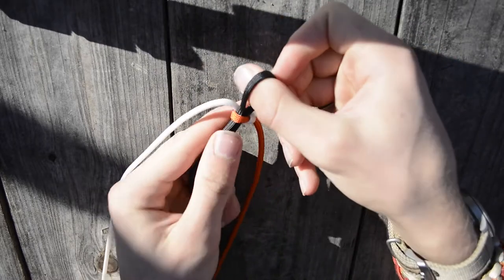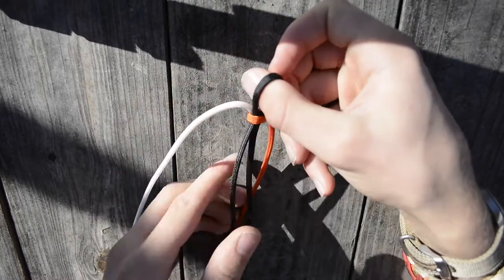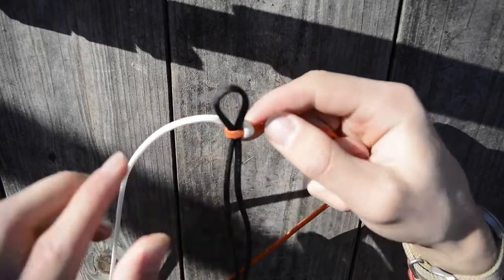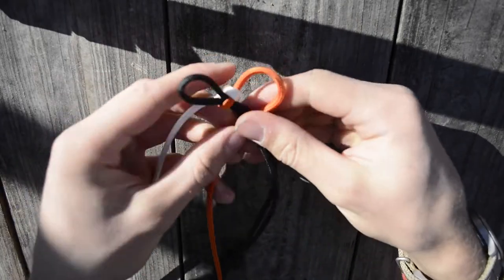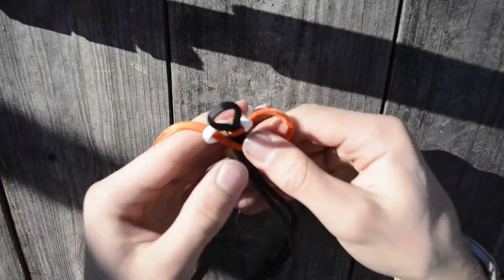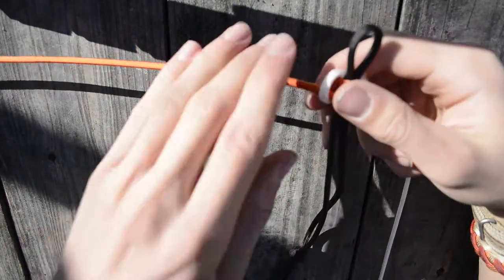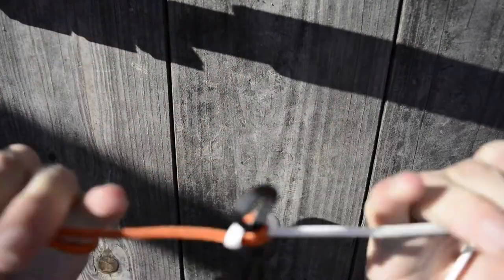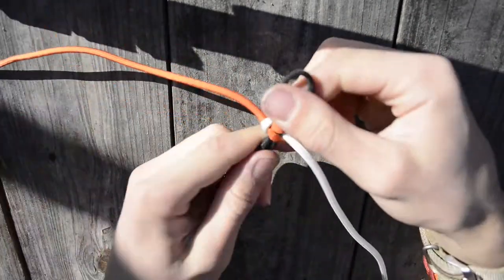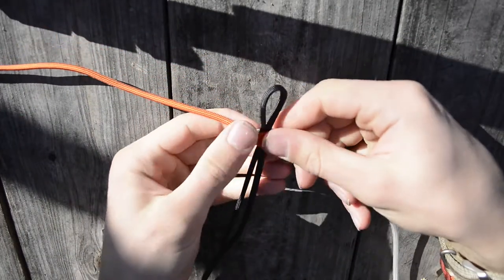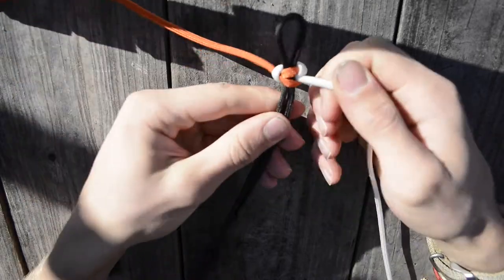And at this point, you basically want to make your loop, which is going to be about the size of your thumb. And the second one. So that is the basics to the start of it.